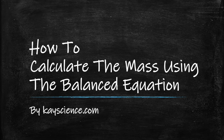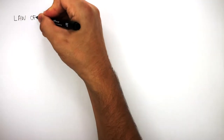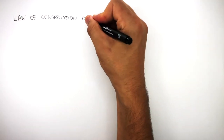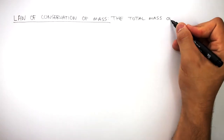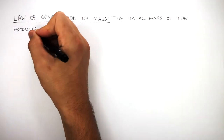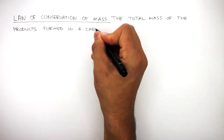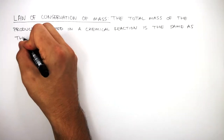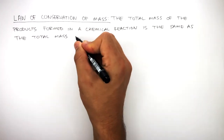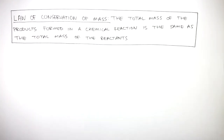How to Calculate the Mass Using the Balanced Equation by KScience.com. The law of conservation of mass is when the total mass of products formed in a chemical reaction is the same as the total mass of the reactants.